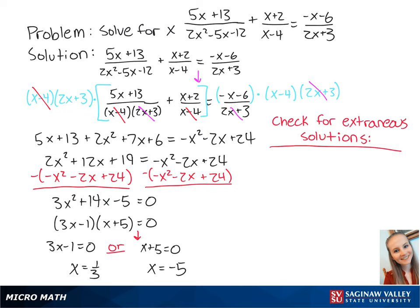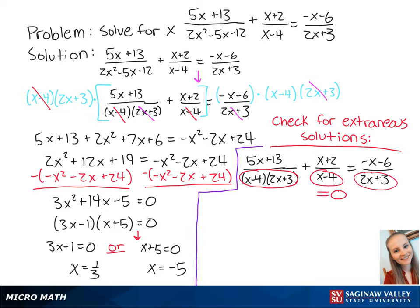Now we have to check for extraneous solutions. For a rational equation like this one, an extraneous solution is when the denominators are equal to 0. So we have the equation x minus 4 cannot equal 0, and we have 2x plus 3 cannot equal 0.